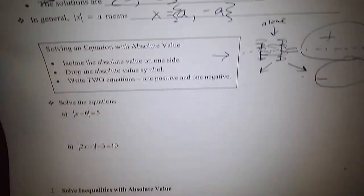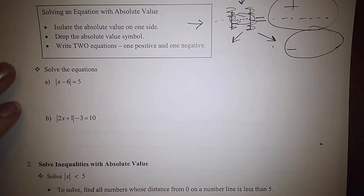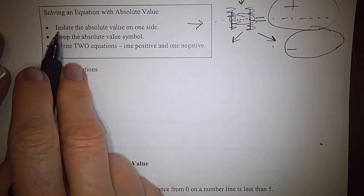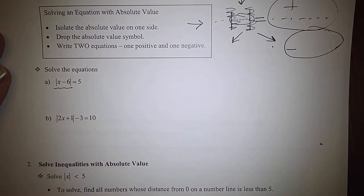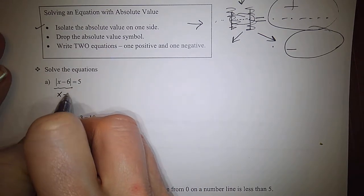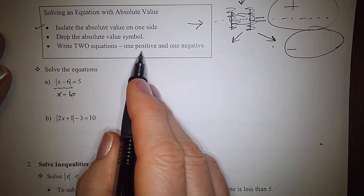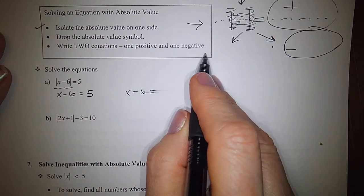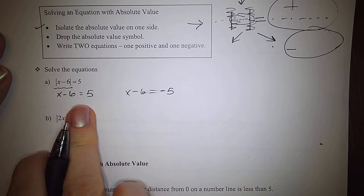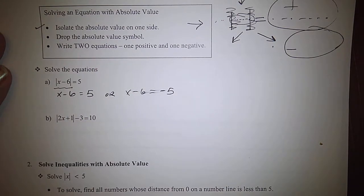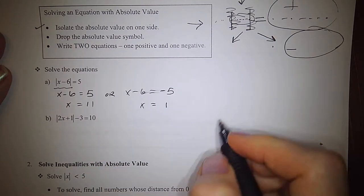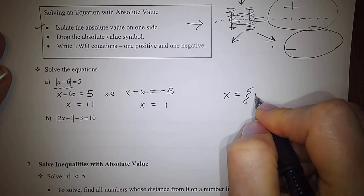Let's go through some examples. Here we are asked to solve the absolute value of x minus 6 is equal to 5. The absolute value is already alone on the left side, so the isolation step is already done. We drop the absolute value symbol and write two equations: the first equals positive 5, and the other equals negative 5. Solving both for x, if I add 6 to both sides of each equation, I get x equals 11 and x equals 1. So I have two solutions: 1 and 11.